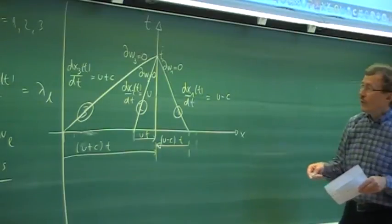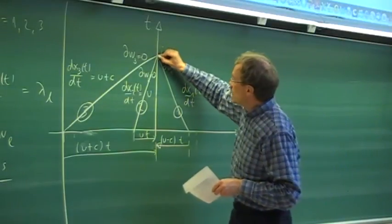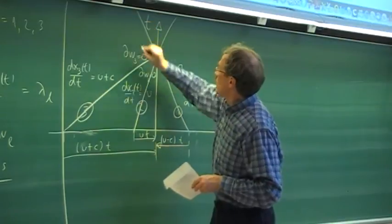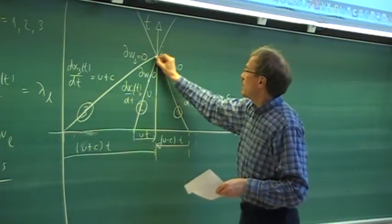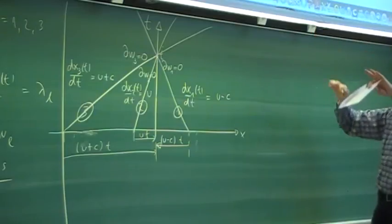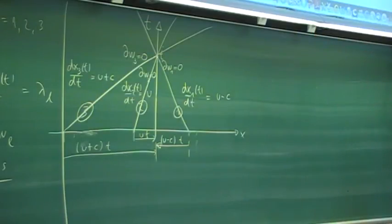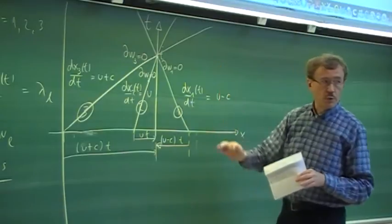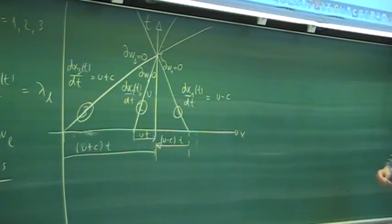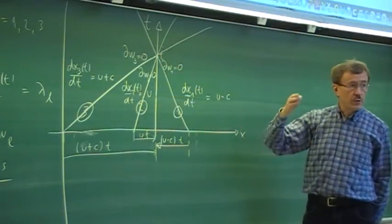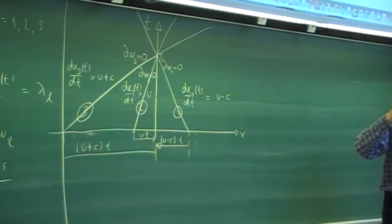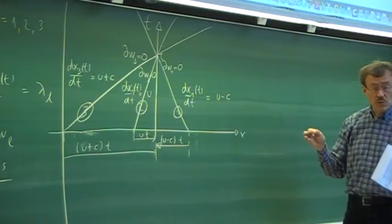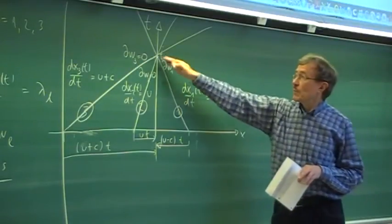The other view is that from a given point, the characteristics continue in time and carry information forward. We have both views. The first view — tracing back to foot points — is usually taken when looking at boundary conditions. When looking at numerical schemes, we sometimes look forward in time.